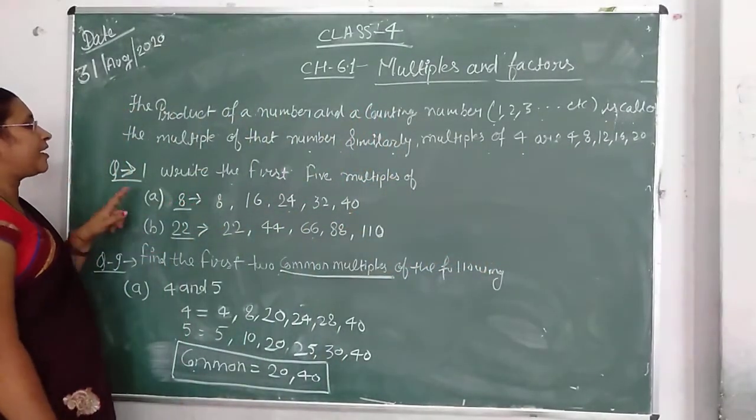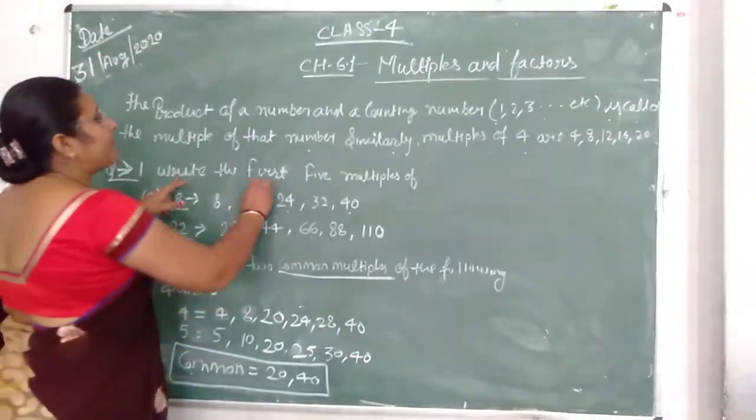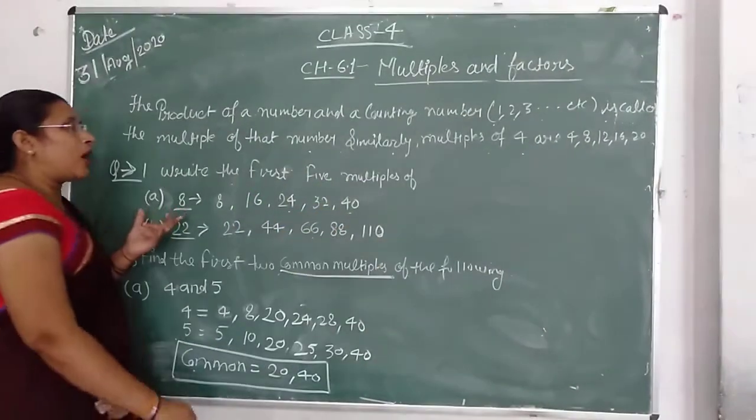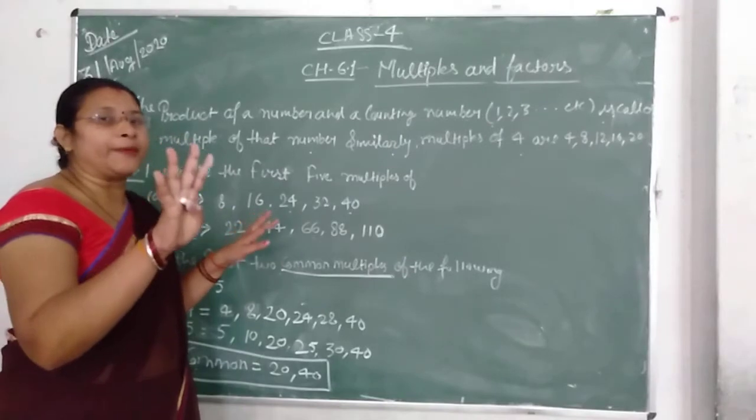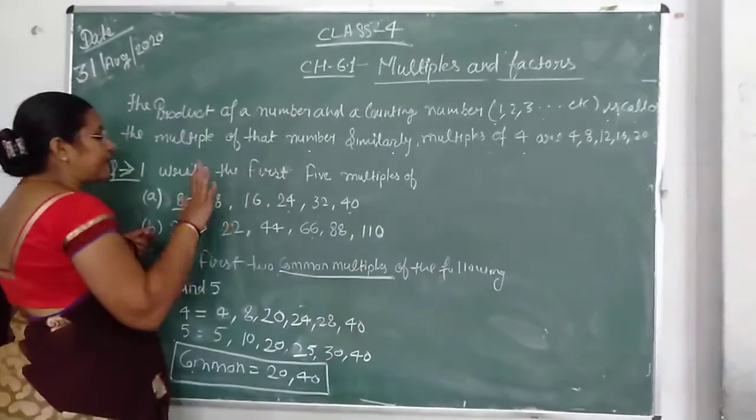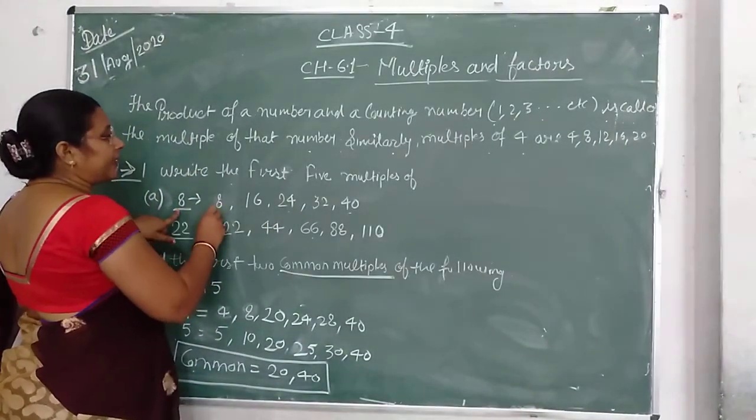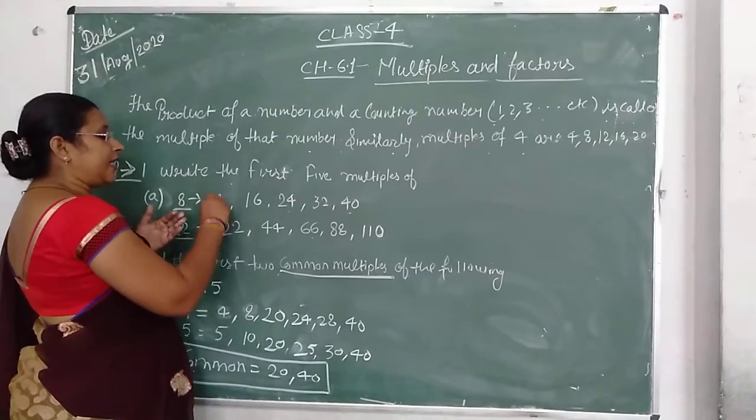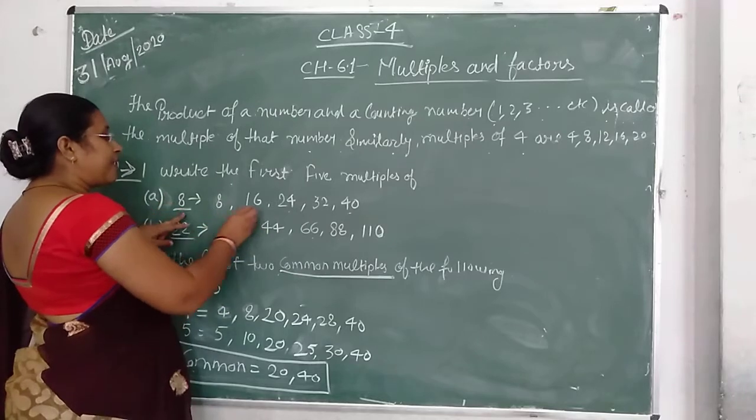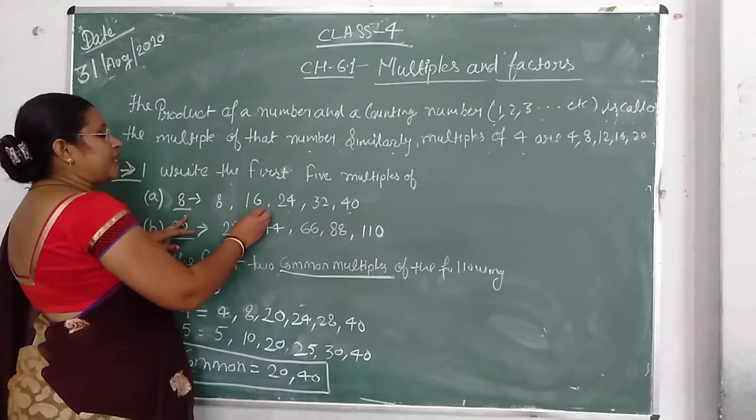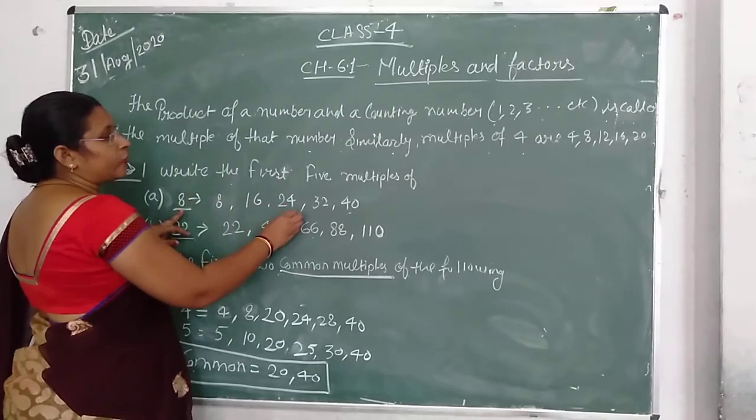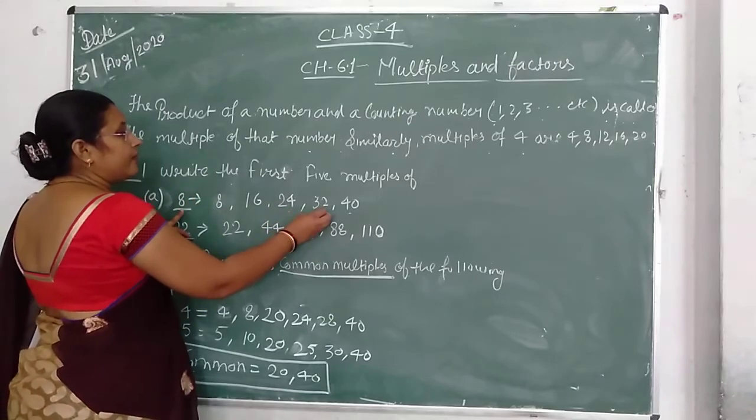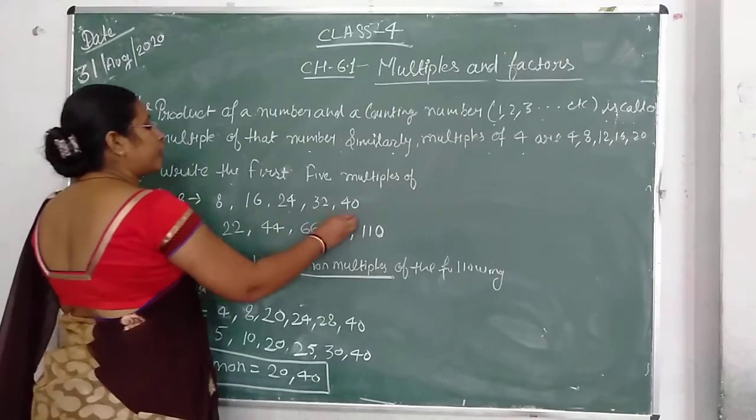Look, question number 5. Write the first 5 multiples. What are the first 5 multiples of 8? From 8's table: 8, 16, 24, 32, and 40.